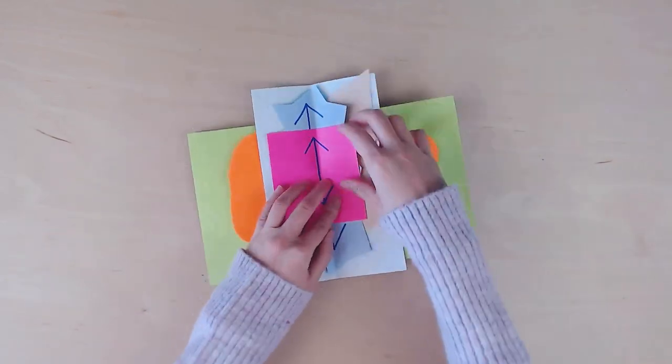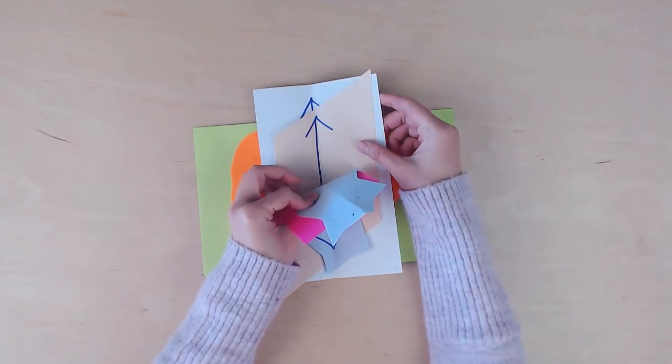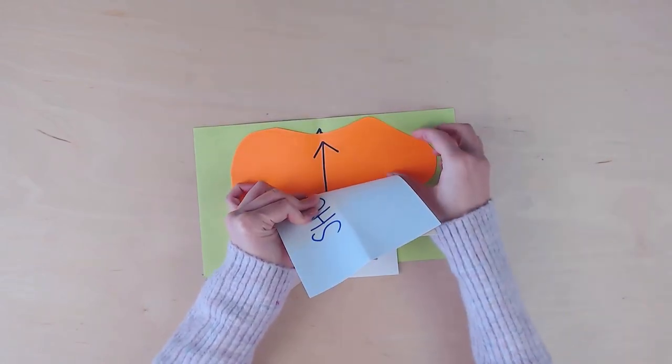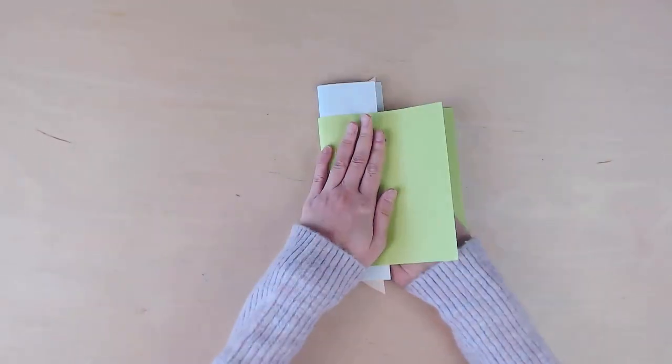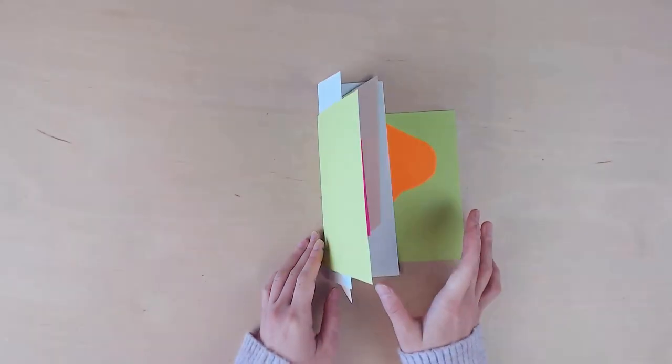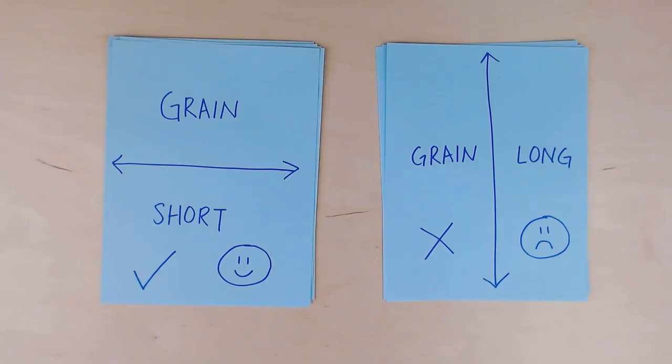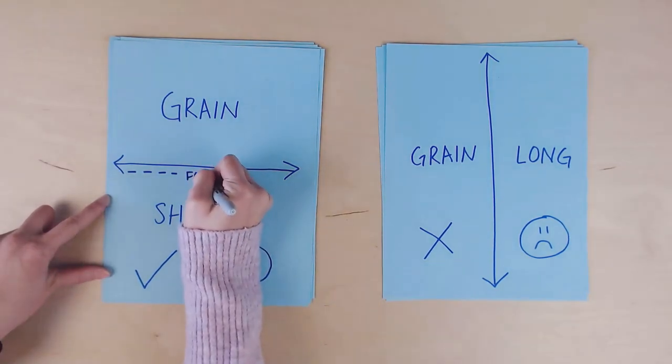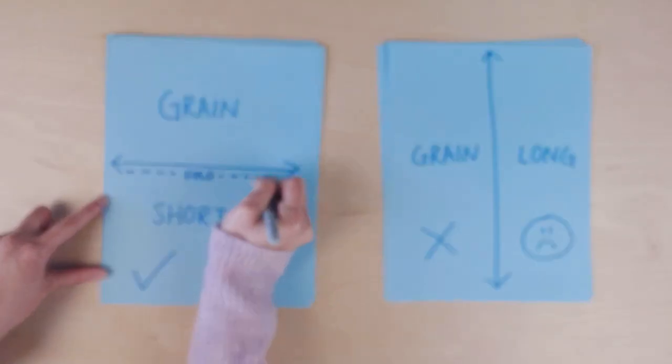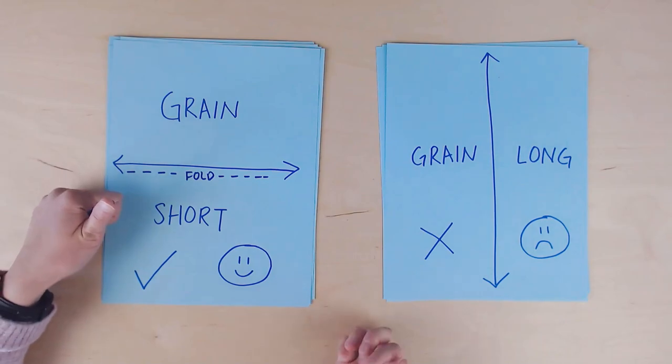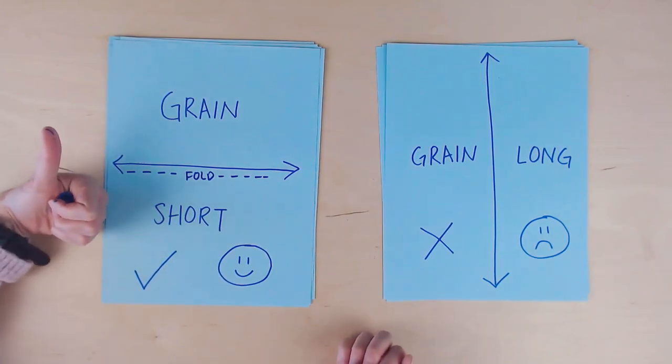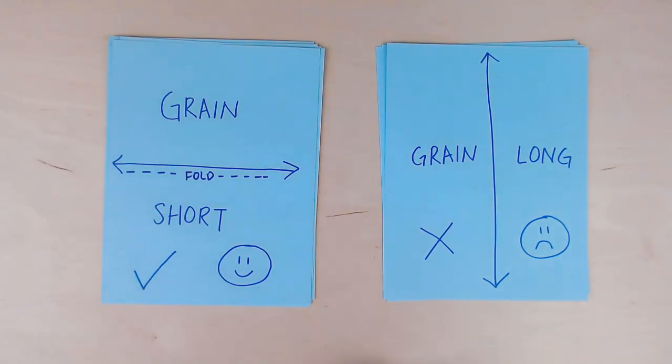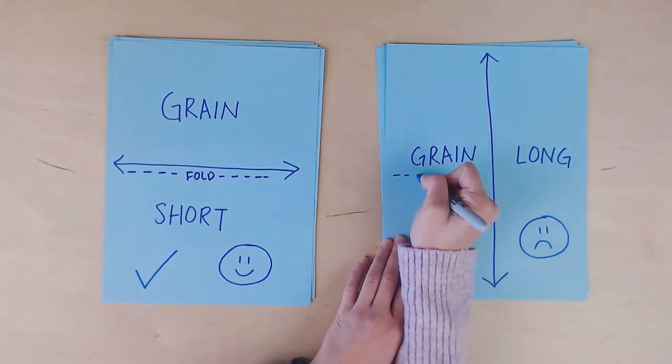There are already a bunch of YouTube videos that talk about how to figure out what the grain is of your paper, so if you aren't sure, please check out those videos. But since I already have you here, I can show you a bit of a test. So I made two stacks of the same kind of paper. For this stack, the paper grain is short, meaning the grain is parallel to the shorter side. So when you fold it in half, the grain is parallel to the spine, which is correct.